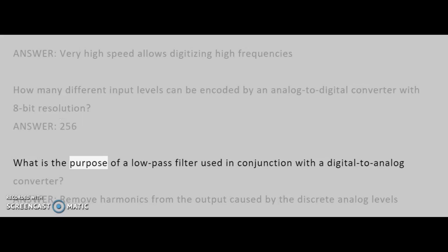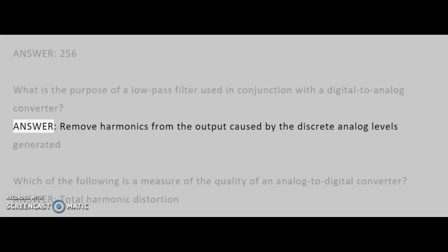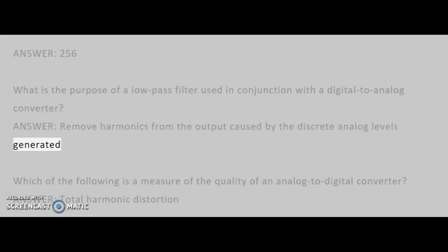What is the purpose of a low-pass filter used in conjunction with a digital to analog converter? Answer: Remove harmonics from the output caused by the discrete analog levels generated.